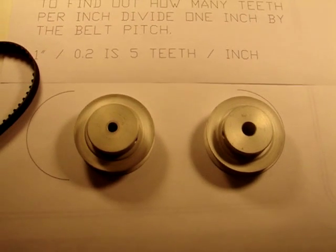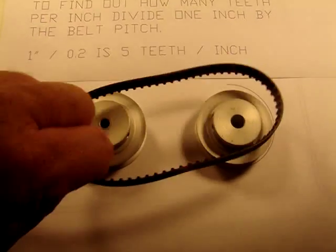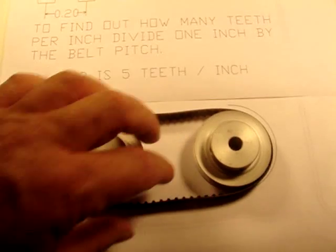We'll do a couple of calcs on it. In this case I've got two 30-tooth pulleys and a 70-tooth belt. We're going to calculate what the center distance should be.